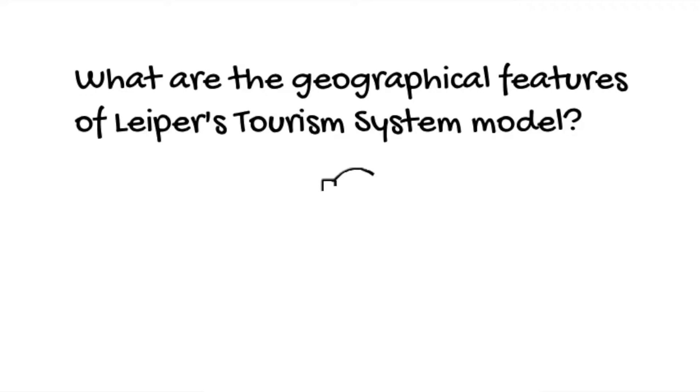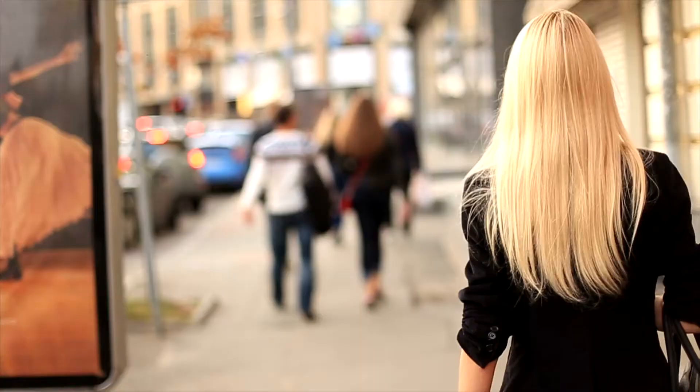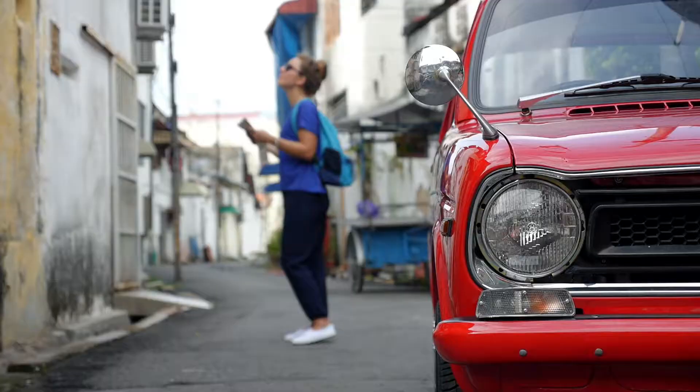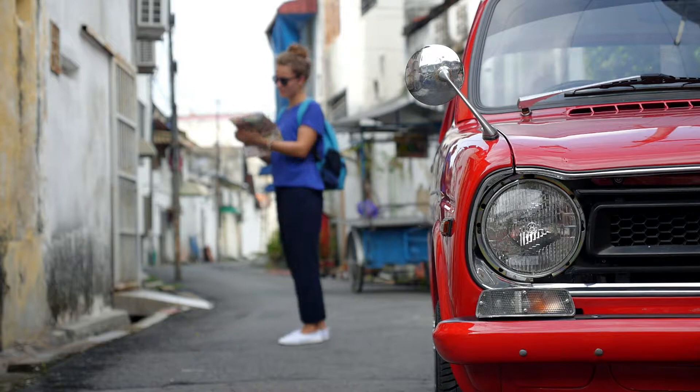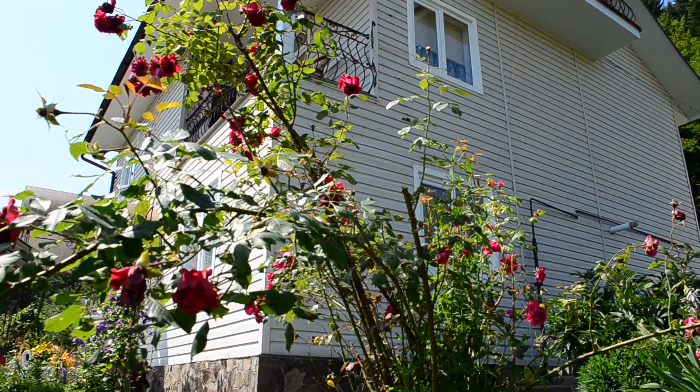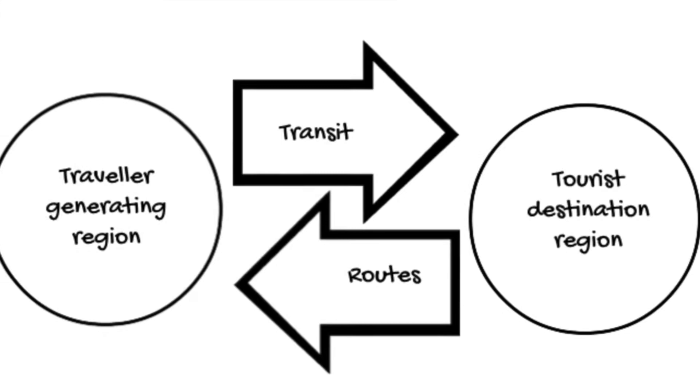The traveller generating region is the area where tourists begin their journey. It's not entirely clear to what level of detail this applies — whether it is their home, their hometown, or their home country — but what we do know is that it's where they are starting off their journey, where they come from.